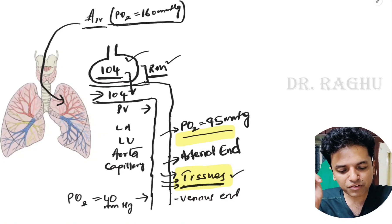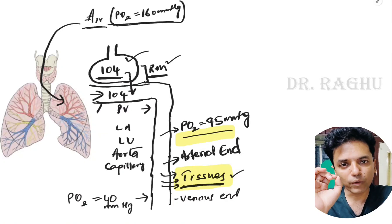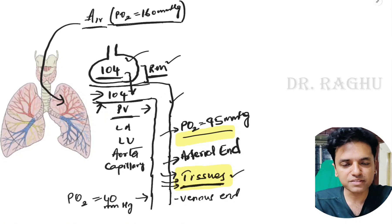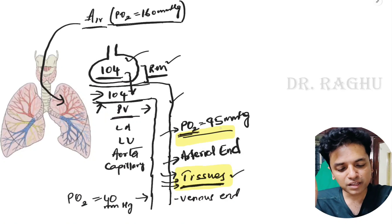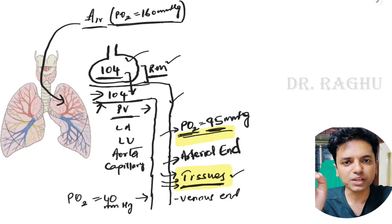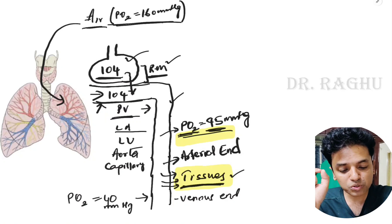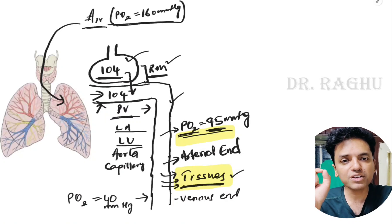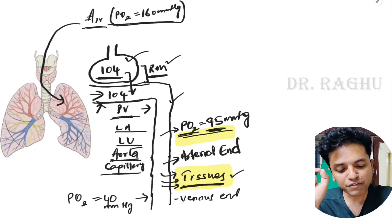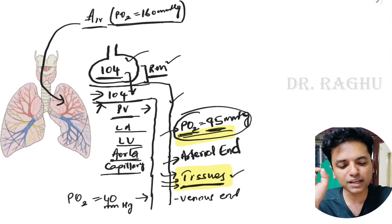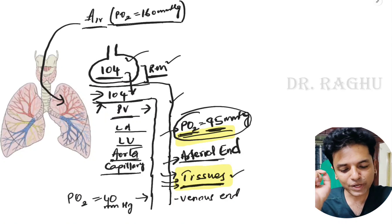After diffusion, oxygen at 104 mmHg is present in the pulmonary capillaries. These drain into the pulmonary veins, and by the time blood reaches the pulmonary veins, pO2 has fallen to 95 mmHg due to blood shunting. From the pulmonary veins, blood moves to the left atrium, then left ventricle, then into the aorta and capillaries to supply the tissues. Arterial blood pO2 is 95 mmHg.